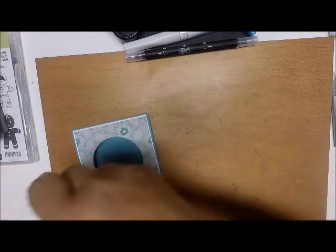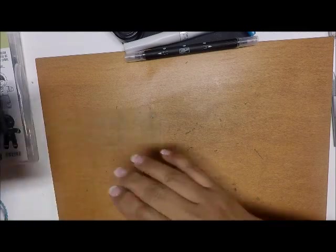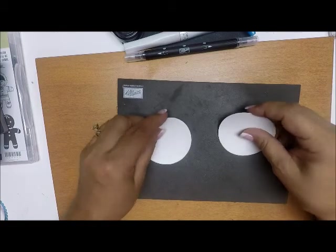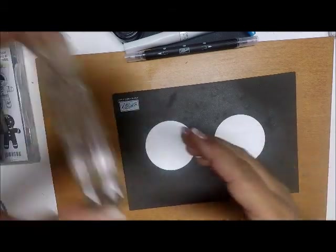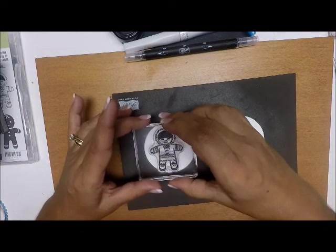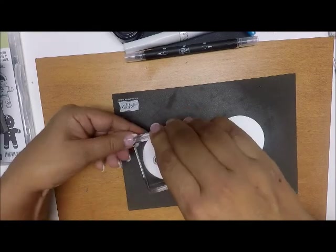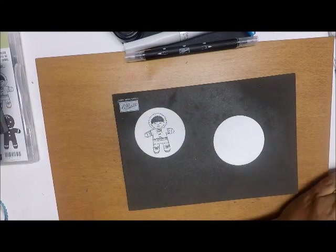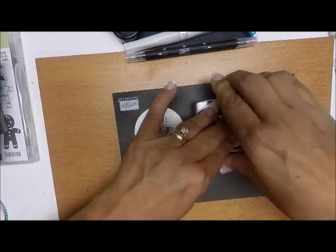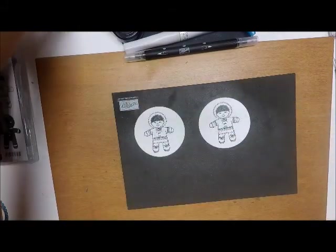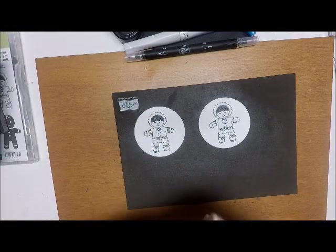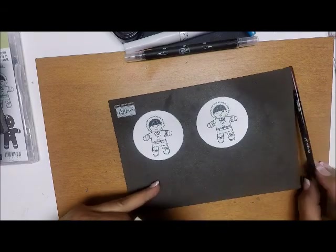Now we can start to stamp. The way we stamped - I'm stamping right in my two circles here and I'm using memento ink so that the colors won't run when I use my blender pen. There's two.